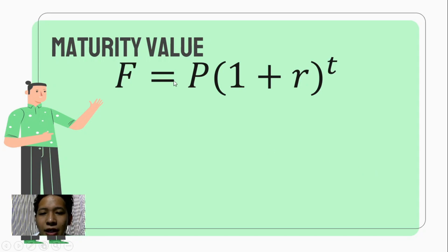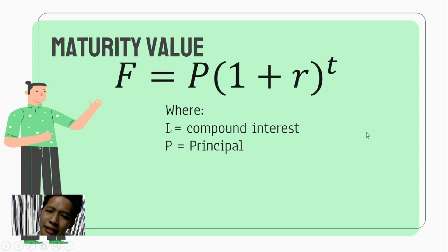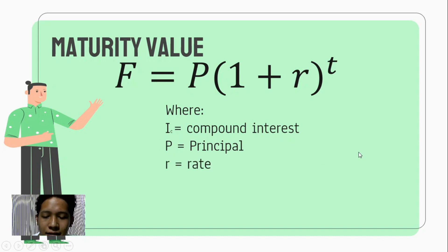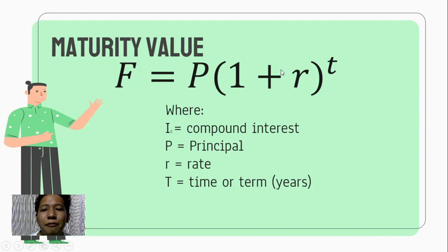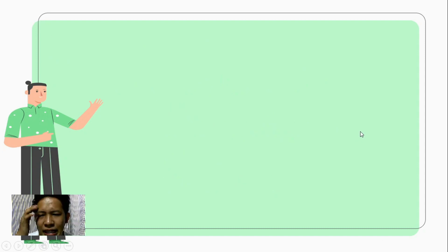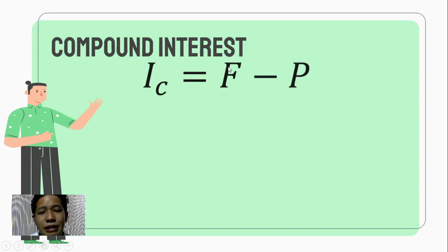This yields our formula for getting the maturity value of compound interest: F equals P times one plus r raised to t, where P is the principal, r is the rate, and t is the time in years. To get only the compound interest earned, we simply subtract the principal from the maturity value.